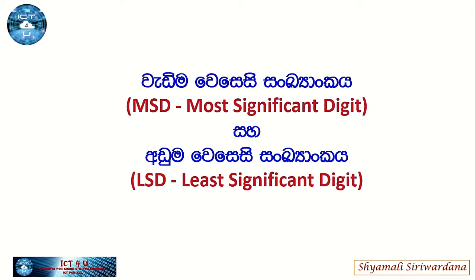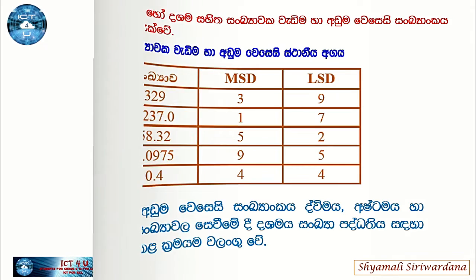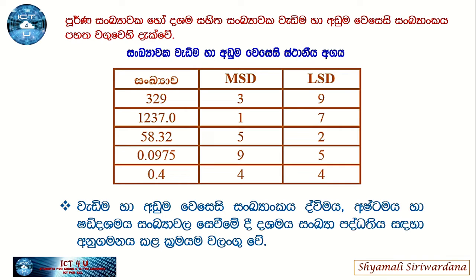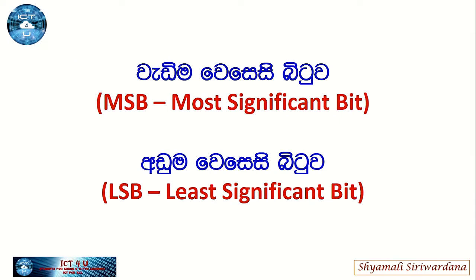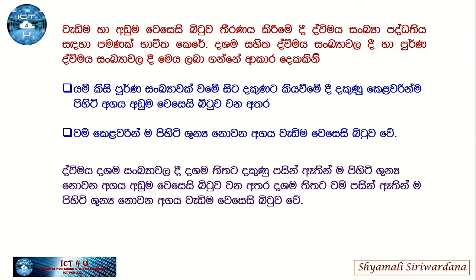So if you look at MSD or LSD, you can see the most significant and least significant. So if you are interested in this, you will be able to get a positional value. If you are interested in MSD or LSD, you will be able to get a positional value in MSD. We call it MSB and LSB.